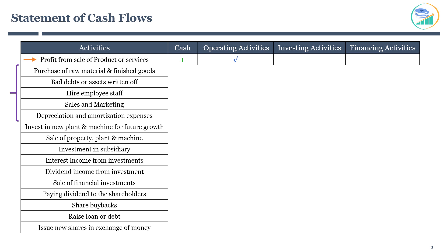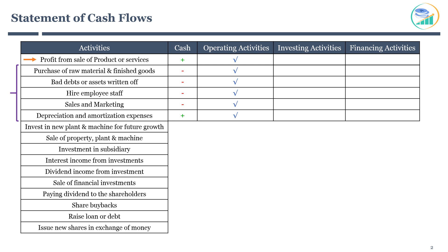Other operating activities include purchase of raw material and finished goods, bad debts or assets written off, hiring employee staff, sales and marketing, and depreciation and amortization expenses. These activities are related to core business operations, hence they are classified as operating activities. All these activities are associated with expenses, so they are recorded as negative, meaning cash is moving out. However, depreciation and amortization are recorded as positive because they are non-cash expenses — cash doesn't leave the company, so they are added back on the cash flow statement.